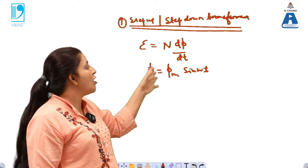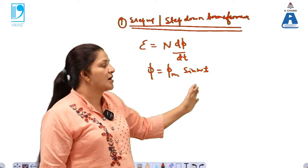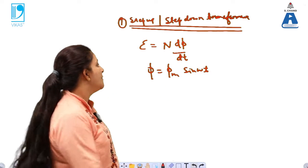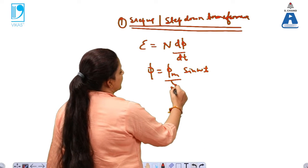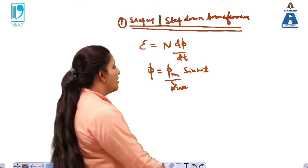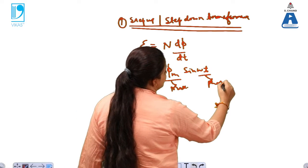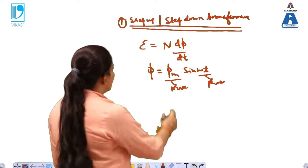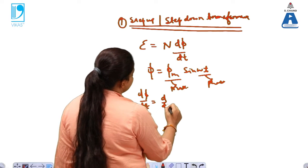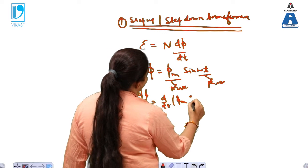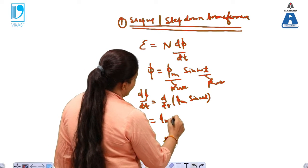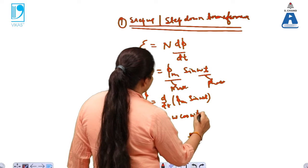The flux φ is given by φm · sin(ωt), where φm is the maximum value of the flux and ωt is the phase representation. So this is the phase of the flux induced. Differentiating this with respect to time: dφ/dt = φm · ω · cos(ωt). This is our dφ/dt.